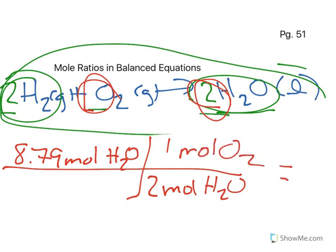So I would take my 8.79 divided by 2, and that would be 4.39 moles of O2. So that mole ratio is where we're going to end up with moles over moles.